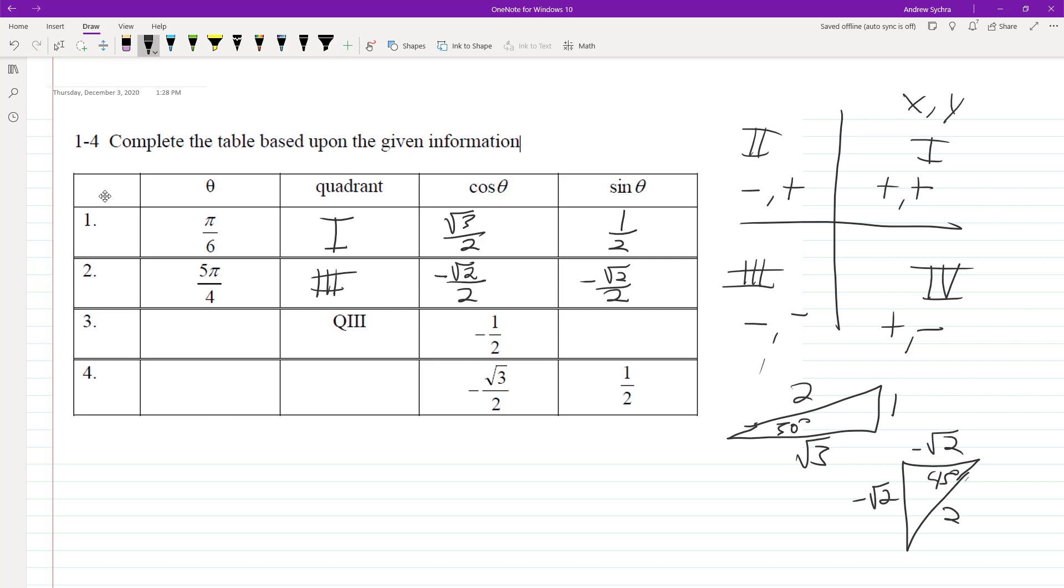Alright, so quadrant 3, we've got, so we know it's in quadrant 3. We've got cosines 1 half, so it's going to be equal to negative 1. So if this is 2, that means this is negative root 3.